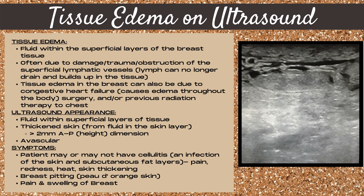Last but not least is tissue edema on ultrasound — fluid within the superficial layers of the breast tissue. This is often due to damage, trauma, or obstruction of the superficial lymphatic vessels where lymph can no longer drain. Tissue edema can also be due to congestive heart failure, surgery, or a history of previous radiation therapy to the chest. The ultrasound appearance shows fluid within the superficial layers, a thickened skin layer measuring greater than two millimeters in the AP dimension, and it is avascular.